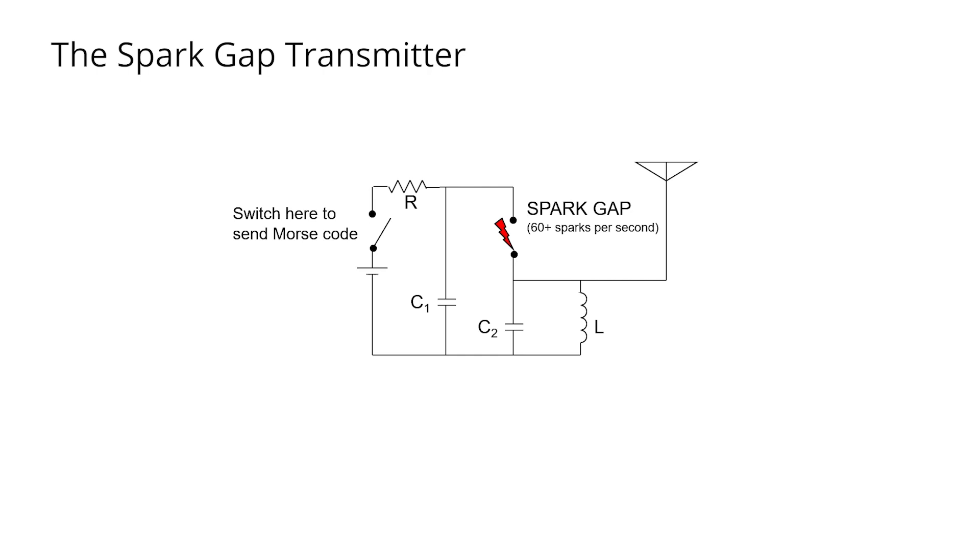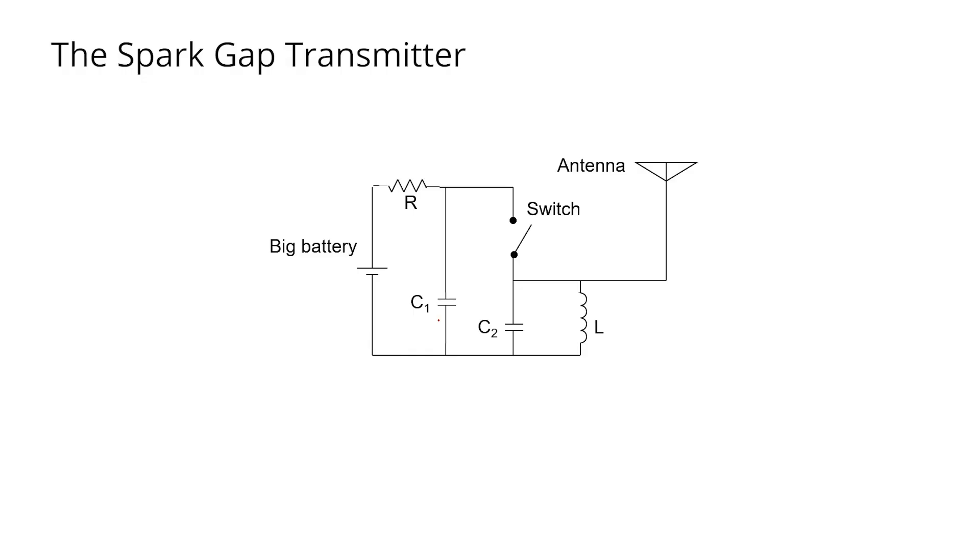It's shown here in this diagram in the open position. The main difference between the diagram that you're seeing now and the transmitter that we described in the previous video is that the motorized switch between capacitors C1 and C2 has been replaced with a SparkGap.